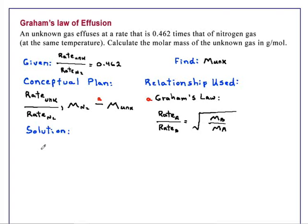So if we take this expression and square both sides, then solve for the molar mass of the unknown, we obtain that the molar mass of unknown is equal to the molar mass of the known, in this case nitrogen, divided by the ratio of the rate of the unknown, squared.